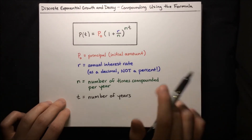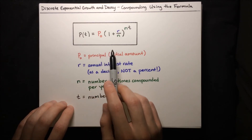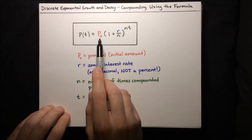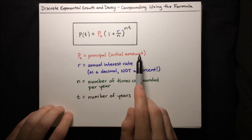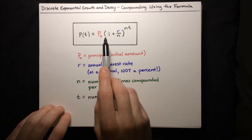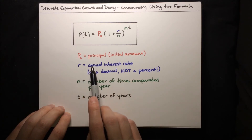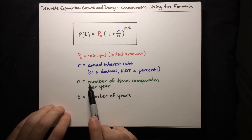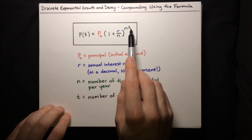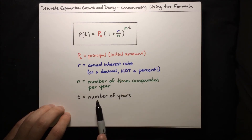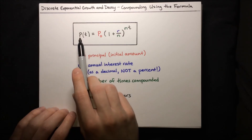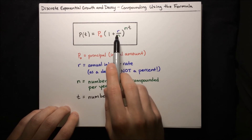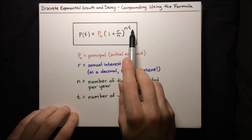Let's recap what we learned from the previous example. We've learned the formula for compound interest: P of T, the amount of money in the account after T years, is equal to the principal P0 — that's the initial amount — times (1 plus R/N) to the power of NT. R is the annual interest rate — remember to use a decimal, not a percent. N is the number of times compounded per year. T is the number of years. So to get the amount of money in an account after T years, you start with the initial amount, increase it at the interest rate for each compound (that's the divided by N part), and then do that however many times you're compounding (that's the NT).